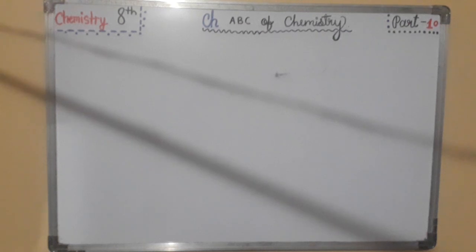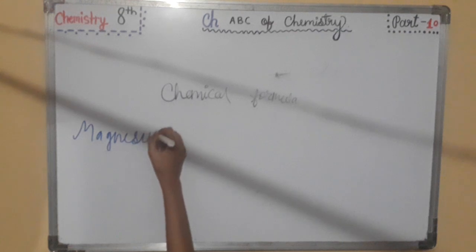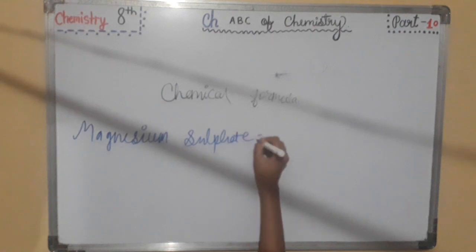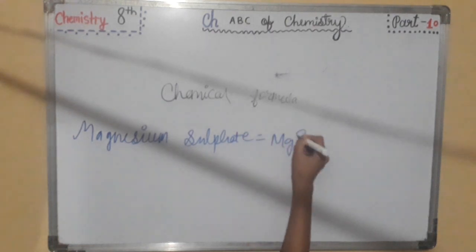These compounds are represented by a chemical formula. For example, the chemical formula of magnesium sulphate is MgSO4. Chemical formula is our topic. Where our first point is, the compounds are represented by a chemical formula. For example, the chemical formula of magnesium sulphate is MgSO4.